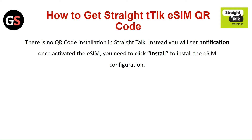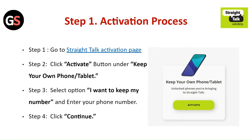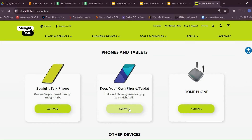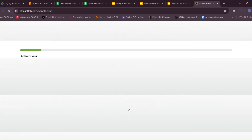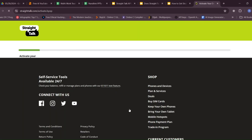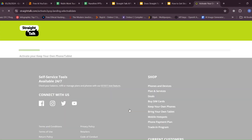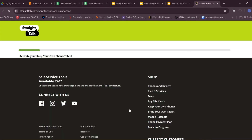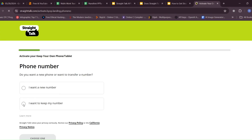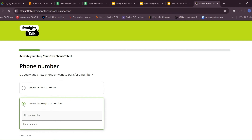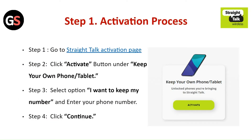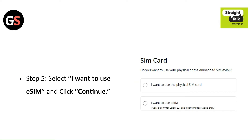Step 1: Activation process. Go to the Straight Talk activation page. Step 2: Click on the activate button under 'Keep your own mobile and tablet.' Step 3: Select the option 'I want to keep my number' and enter your phone number. Step 4: Click Continue.